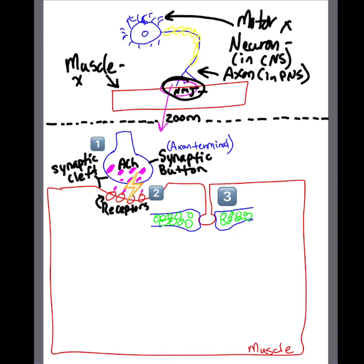Particularly, we're going to look into the synaptic button. So if we zoom in here, this is what you're going to be seeing: you're going to be seeing that axon terminal, particularly that synaptic button that is filled with acetylcholine or ACh for short. And if you notice, there's going to be a space in between these two structures, in between the axon terminal and the muscle itself, the muscle end plate. We call that the synaptic cleft.